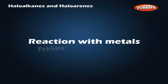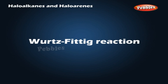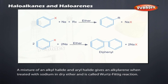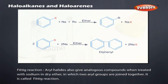Reaction with metals — Wurtz-Fittig reaction: a mixture of an alkyl halide and aryl halide gives an alkylarene when treated with sodium in dry ether; this is called the Wurtz-Fittig reaction. Fittig reaction: aryl halides also give analogous compounds when treated with sodium in dry ether, in which two aryl groups are joined together; this is called the Fittig reaction.